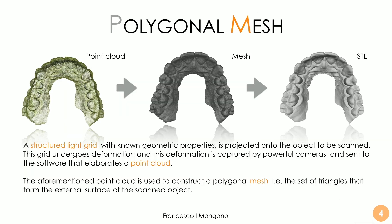What is a mesh? The polygonal mesh is the 3D reconstruction of the scanned object. This 3D reconstruction is generated by the powerful software the scanner is equipped with — a structured light grid with non-geometric properties is projected onto the object to be scanned.